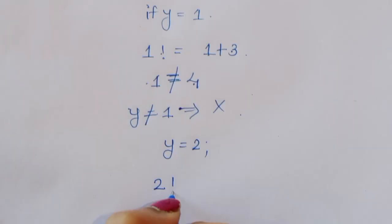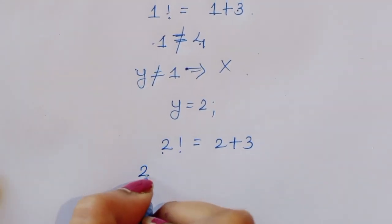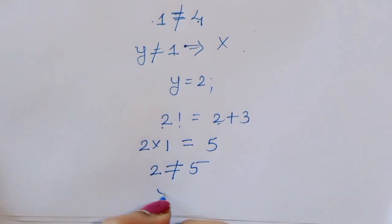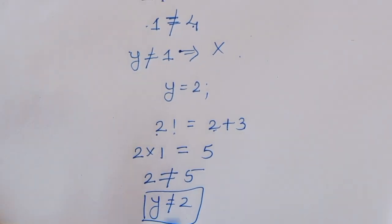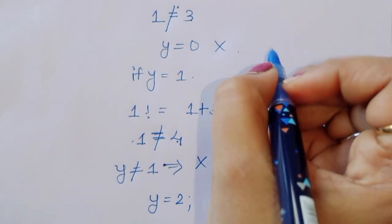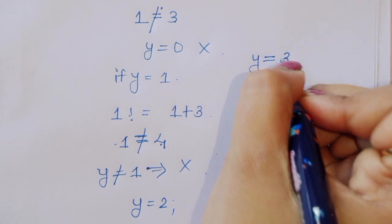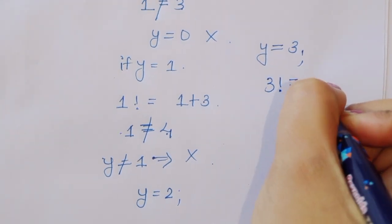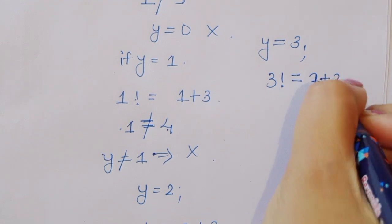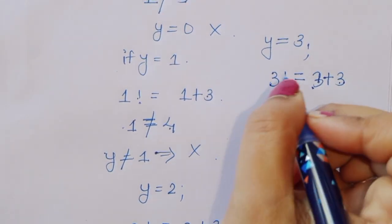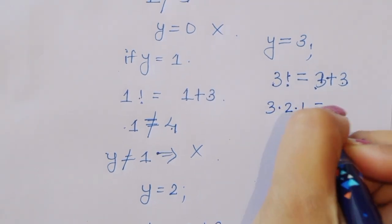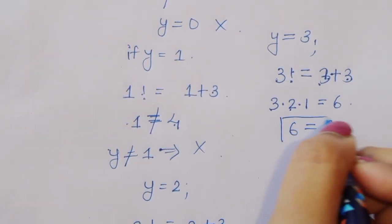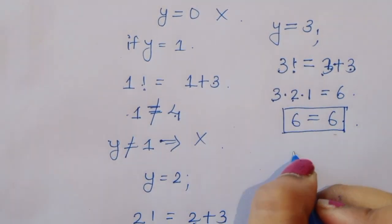Now try y equals 3. Factorial of 3 equals 3 plus 3. Factorial of 3 is 3 times 2 times 1 equals 6, and 3 plus 3 is also 6. So 6 equals 6 — yes! Therefore y equals 3 is the solution.